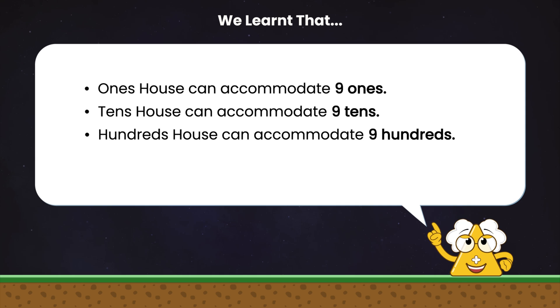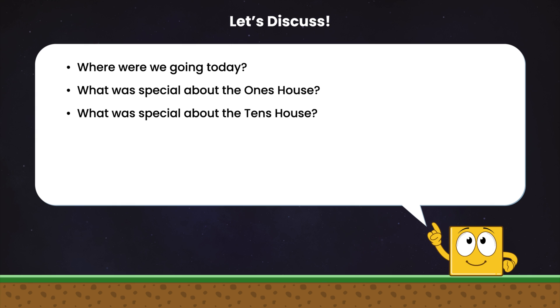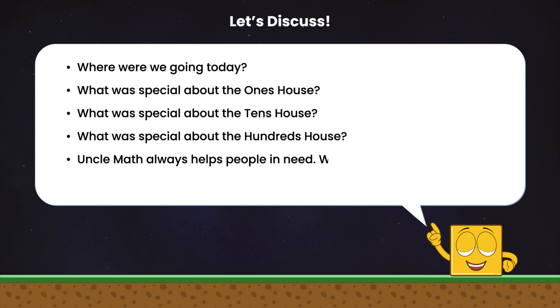Let's discuss: Where were we going today? What was special about the one's house, tens house, and hundreds house? Uncle Matt always helps people in need. What kind of person is he? Have you been helpful anytime? Explain.